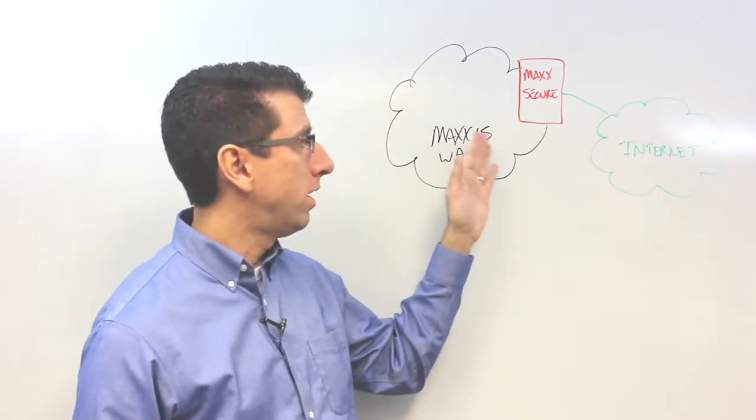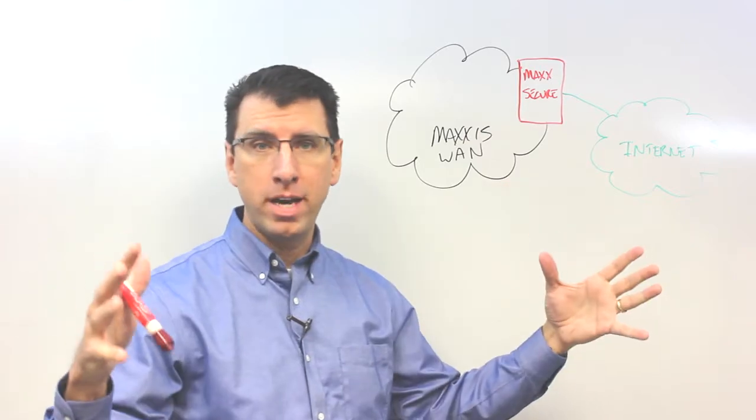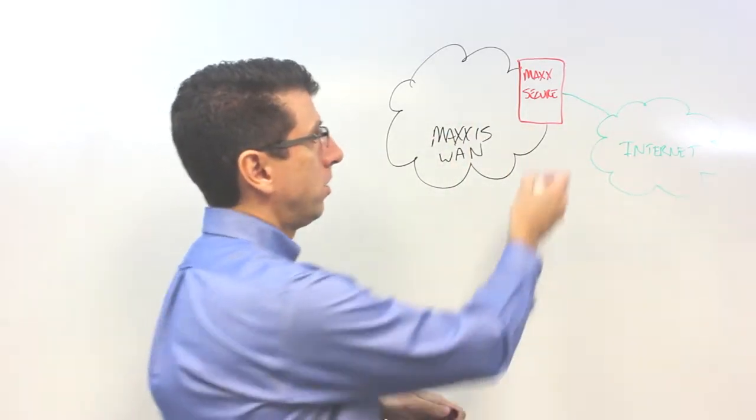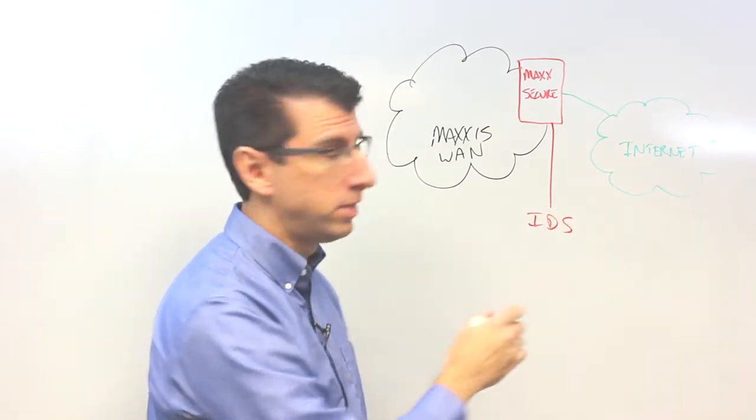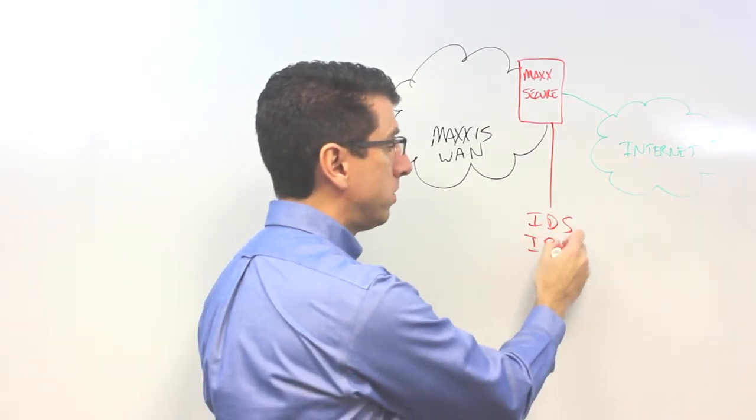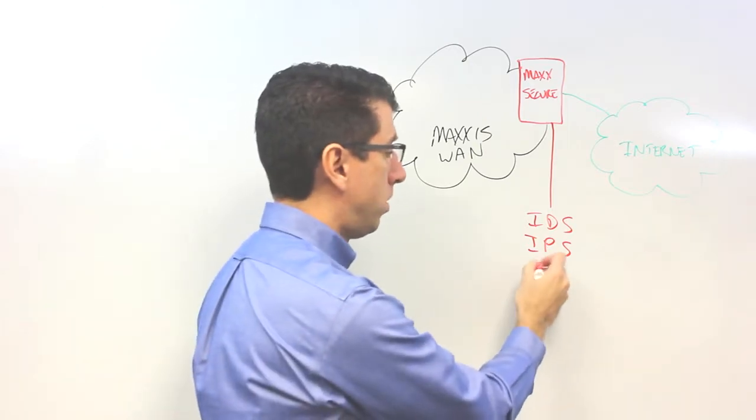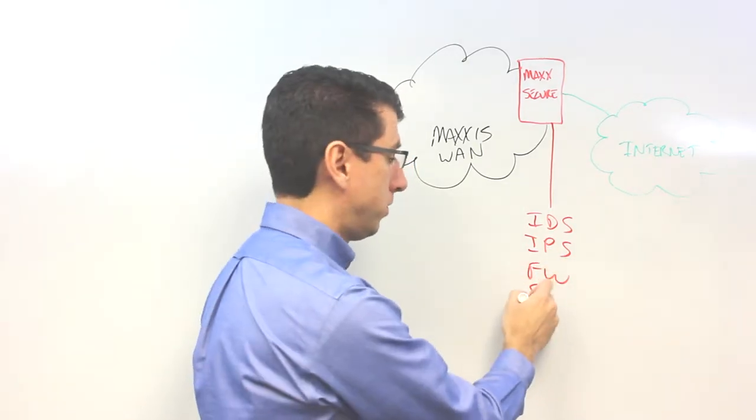MaxSecure acts as a network level protection between you and the general internet. MaxSecure has all those different features in it. It has intrusion detection systems built in, intrusion prevention systems built in, firewall built in, and spam filters built in.